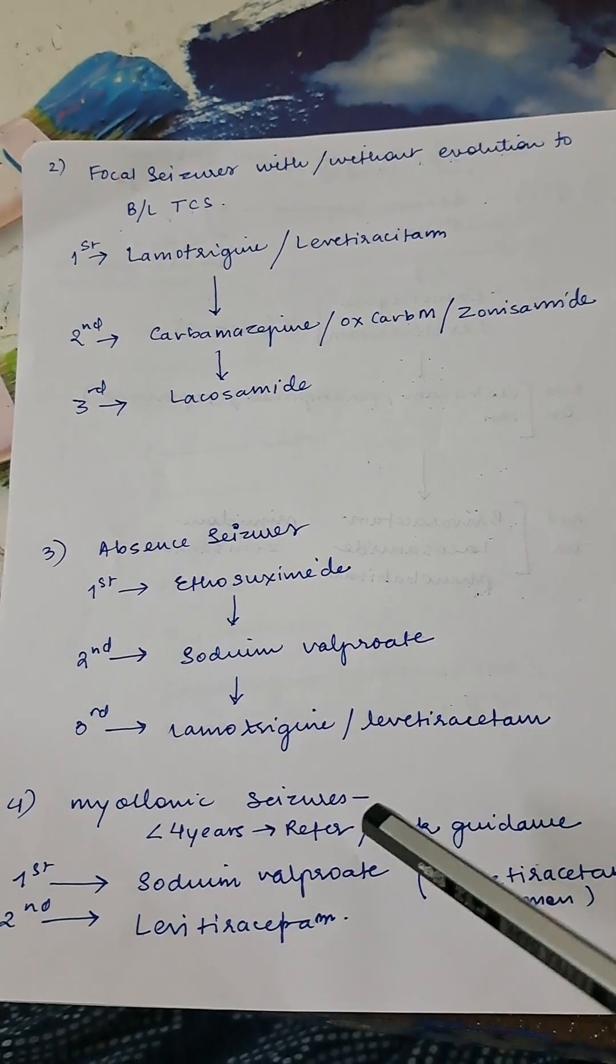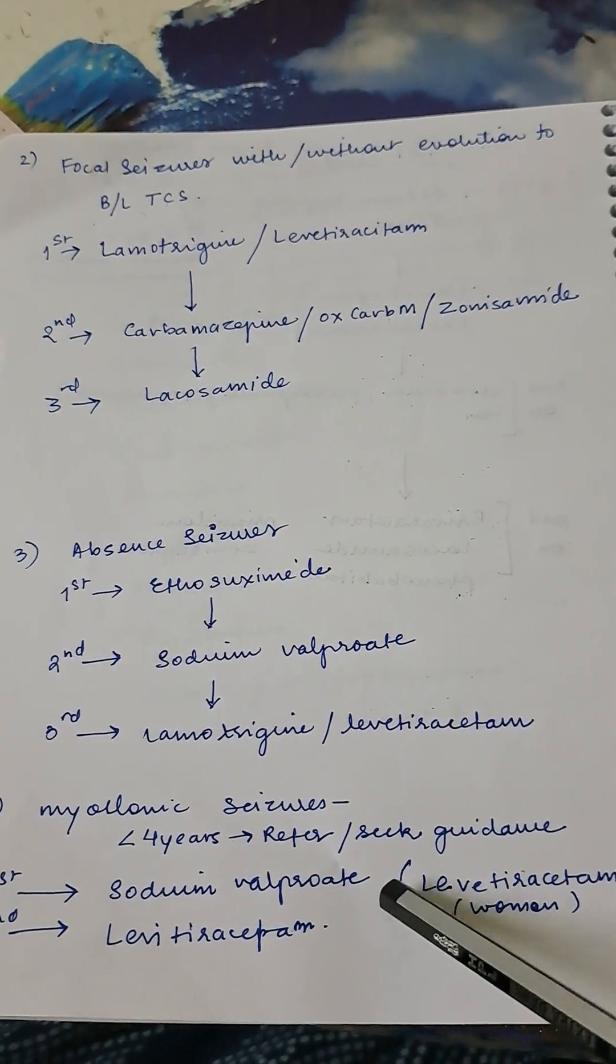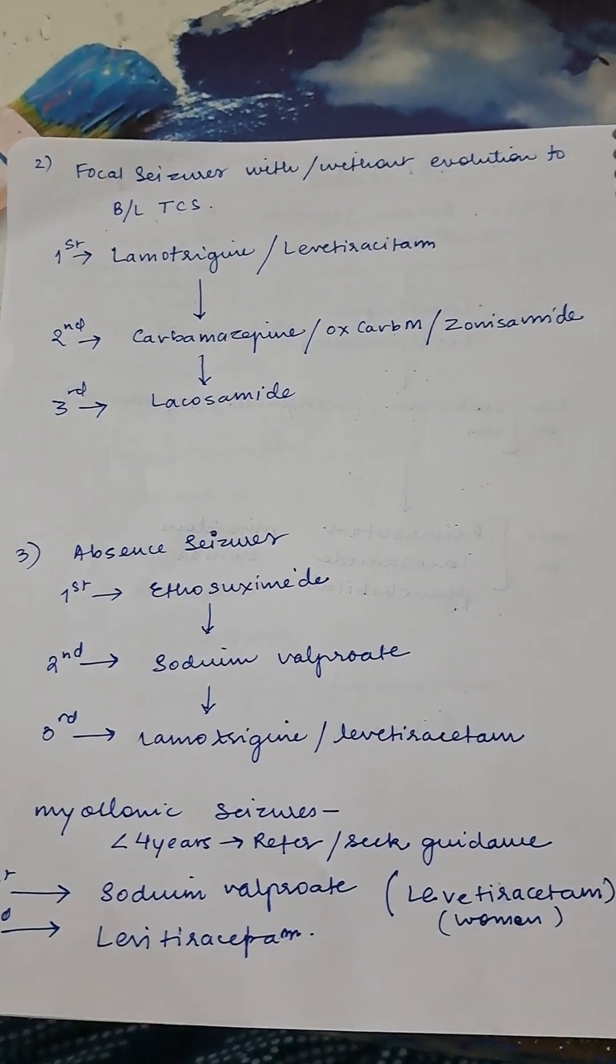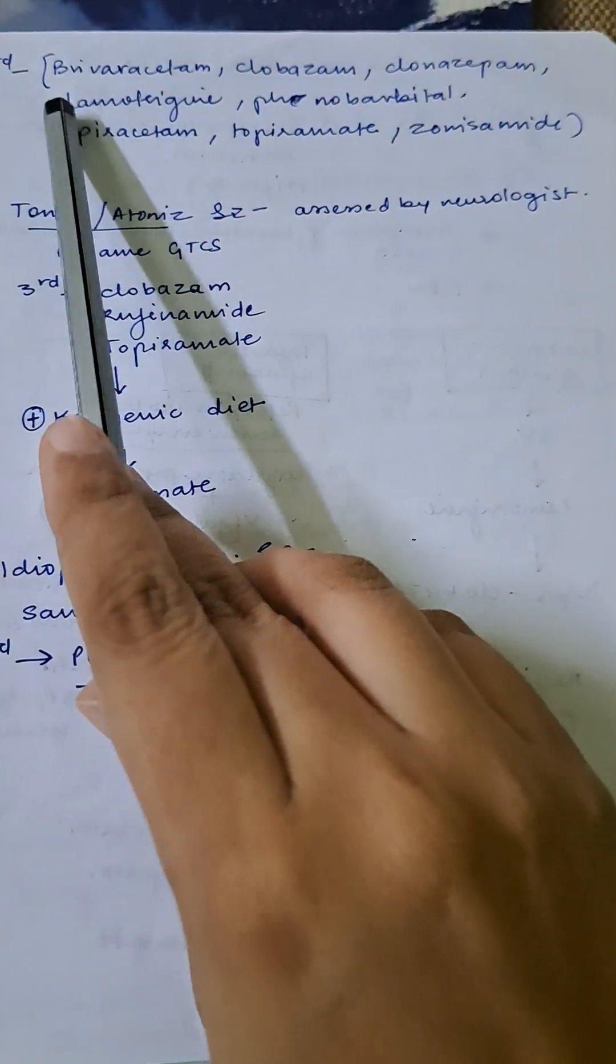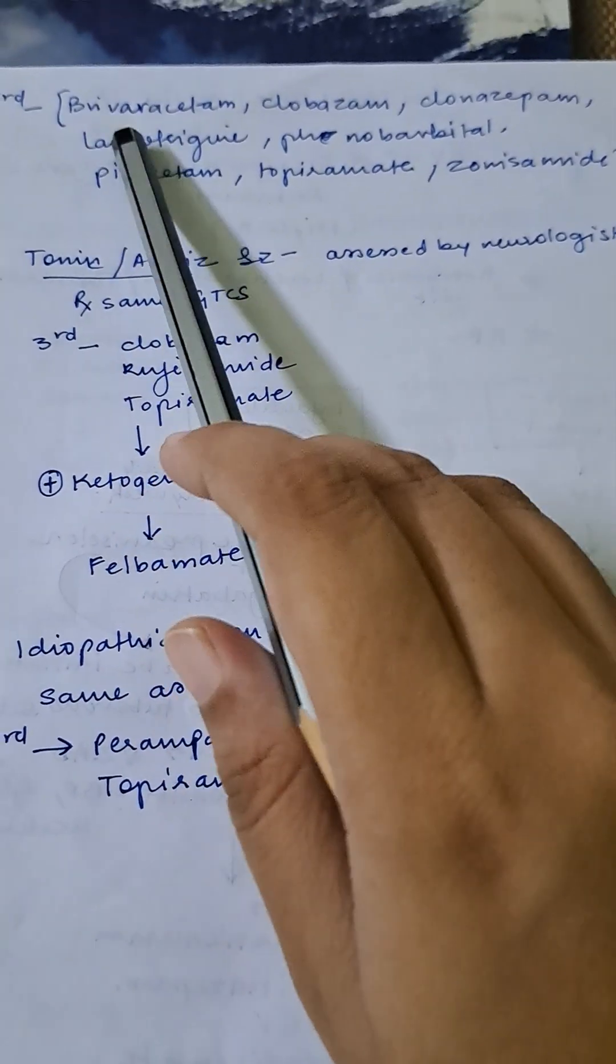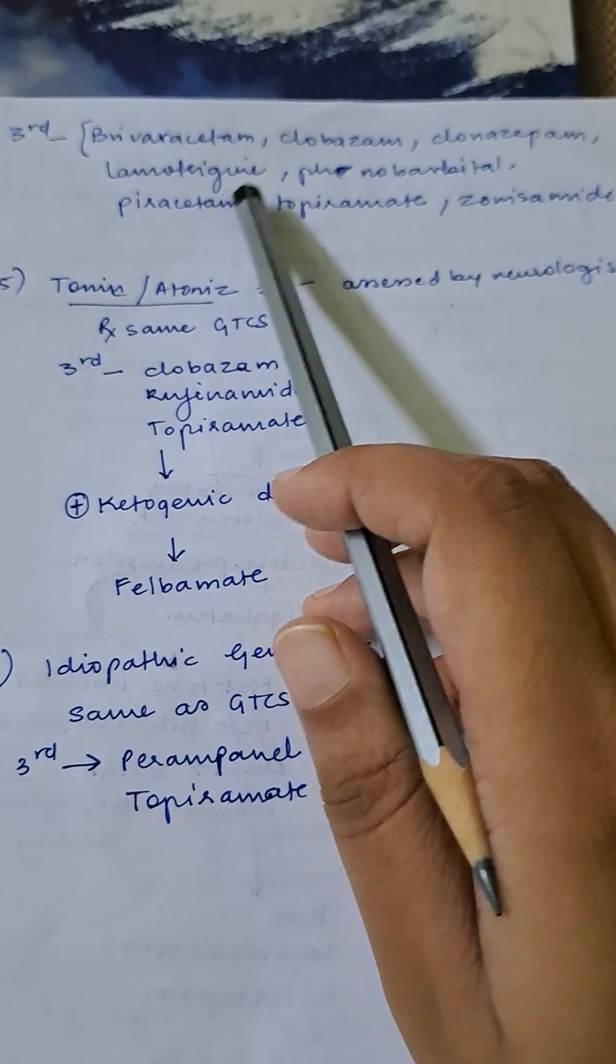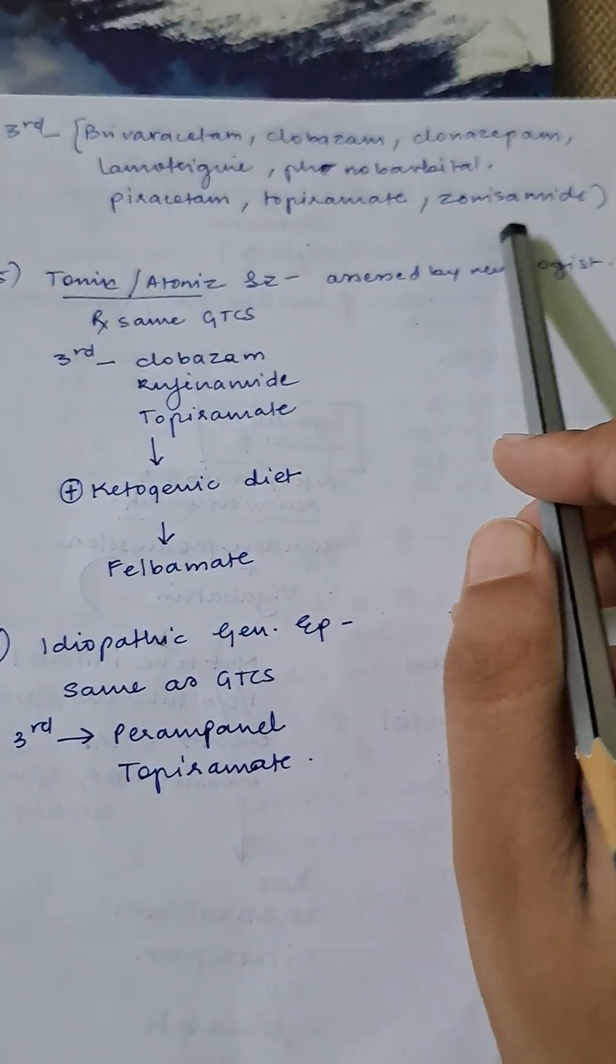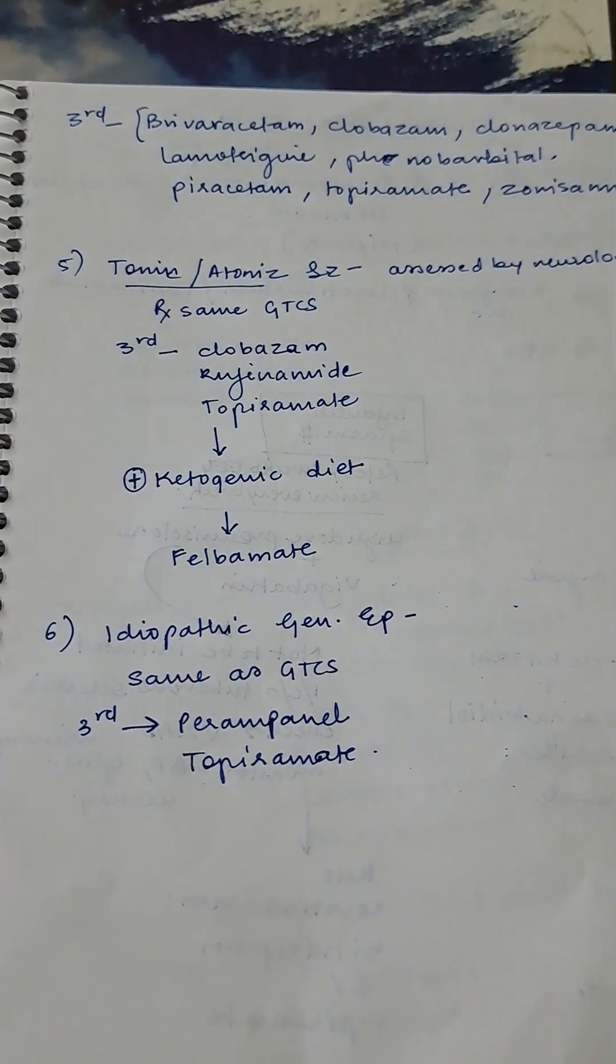First in this case again will be sodium valproate. This is the most common question asked in MRCP examination. In case of women, you give levetiracetam. Okay, then second line is levetiracetam. Third line in case of myoclonic seizures is brivaracetam, clobazam, clonazepam, lamotrigine, phenobarbital, piracetam, topiramate, and zonisamide. The third lines are mostly not asked. The questions are on first and second line, but just to know what drugs are involved.